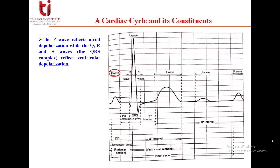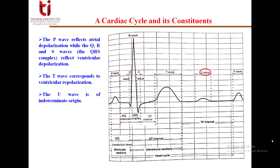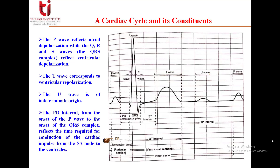The P wave reflects atrial depolarization, while the QRS complex reflects ventricular depolarization. The T wave corresponds to ventricular repolarization. The U wave is of indeterminate origin. The PR interval starts from the onset of the P wave to the onset of the QRS complex, and it reflects the time required for conduction of the cardiac impulse from the SA node to the ventricles.